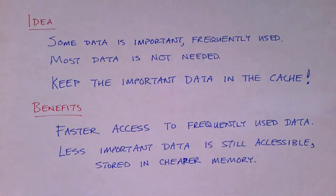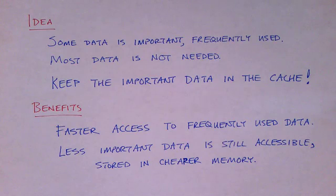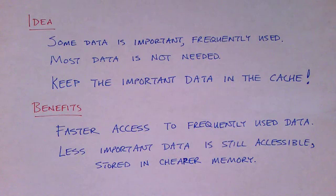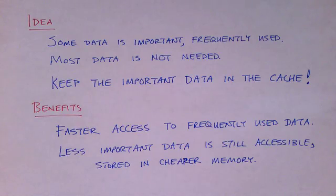The main idea behind cache memory is that some data is important, frequently used, and critical to be served to the CPU quickly. However, most data is not — it's not needed very often and it's not nearly as critical. So the idea is that we keep the important data in the cache so we can give it to the CPU much faster. The less important data is still accessible but it's stored in a much larger, much slower, and much cheaper memory.